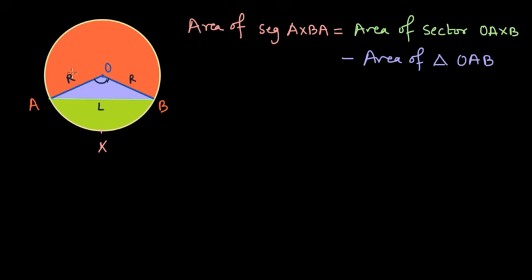Now, let us say this R is 10 centimeters and if L is 10 root 3 and the central angle is 120 degrees. What is the area of the segment AXBA? Now this area of the segment AXBA is in green.